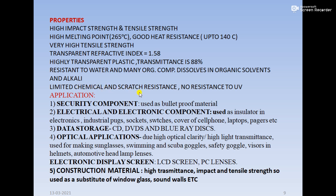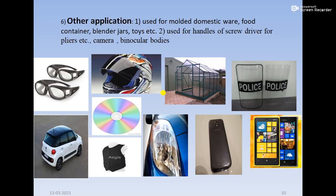One more property I forgot to mention: limited scratch and chemical resistance. You can remember this like your spectacle lenses — specs get scratched, so that is called limited scratch resistance. That is the property of polycarbonate. Those are the applications — goggles, helmet visors, bulletproof glass, back covers, headlamps, CDs, bulletproof jackets, and car glass. That is polycarbonate — its preparation, structure, properties, and applications. That's it from today's lecture, thank you.